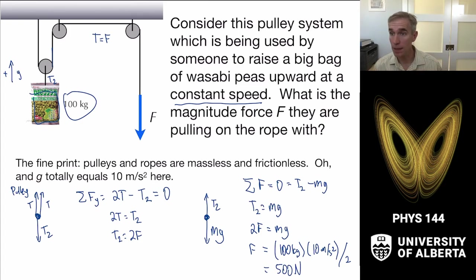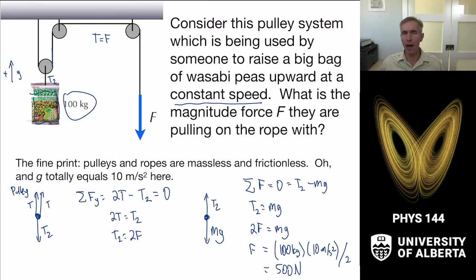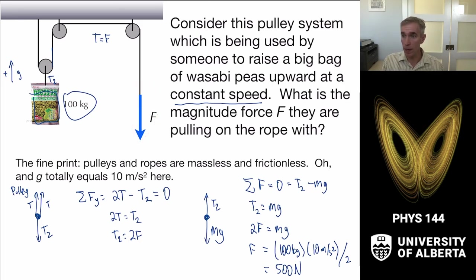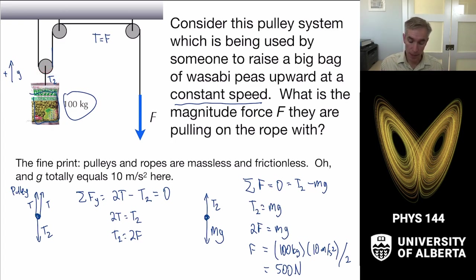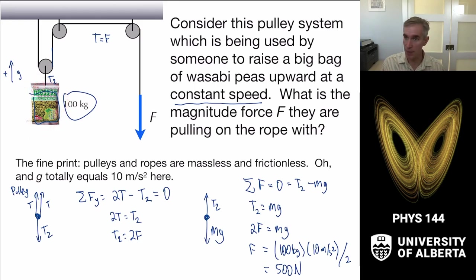What's neat about this — and why people use pulleys — is that pulling on one end with force F ends up pulling upward on the wasabi peas with a force of magnitude 2F. That allows us to double the force we're pulling upward. And that's basically why there's a field of engineering.